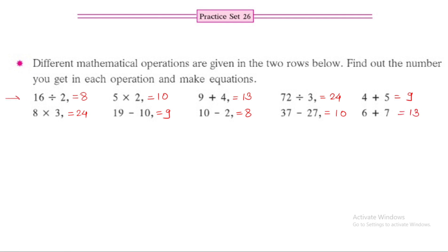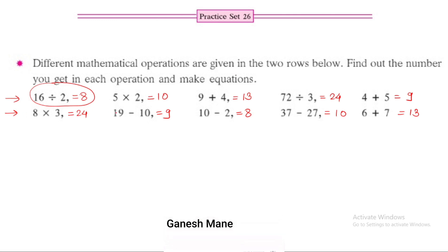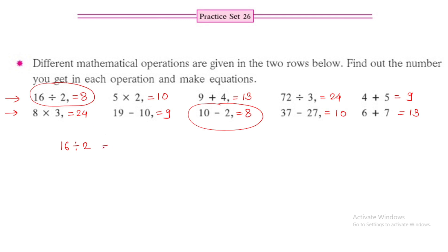The first row gives 8 — that is, 16 divided by 2 is 8. In the second row, 10 minus 2 is also 8. So the equation formed is: 16 divided by 2 is equal to 10 minus 2.